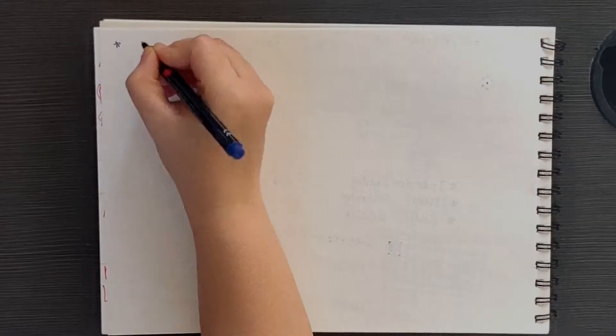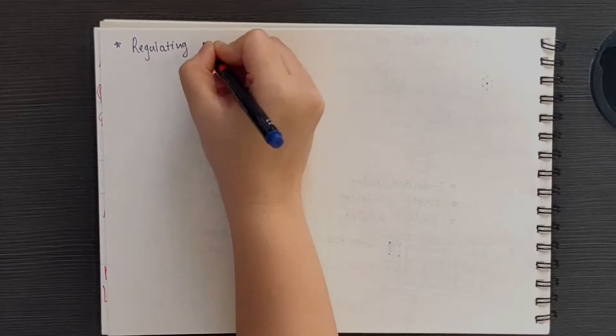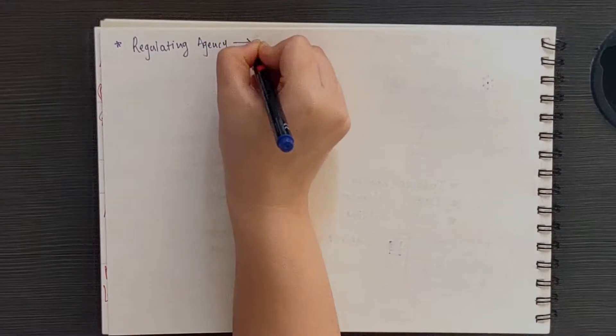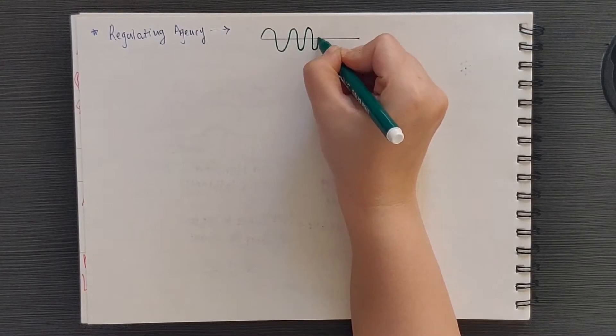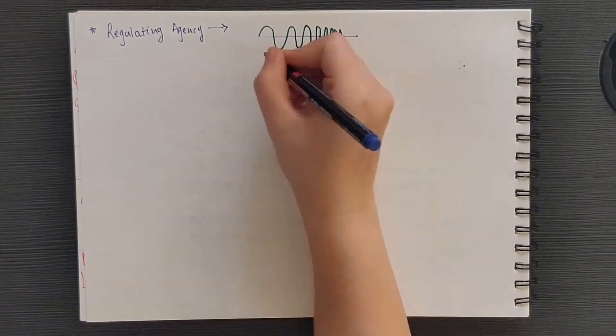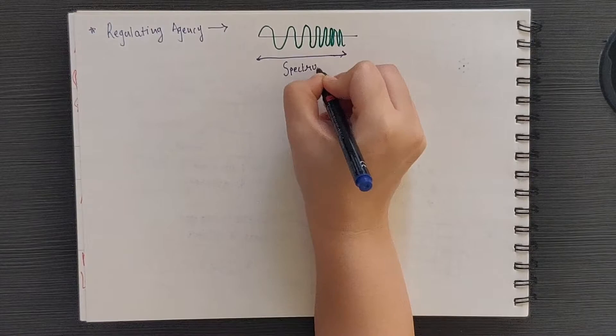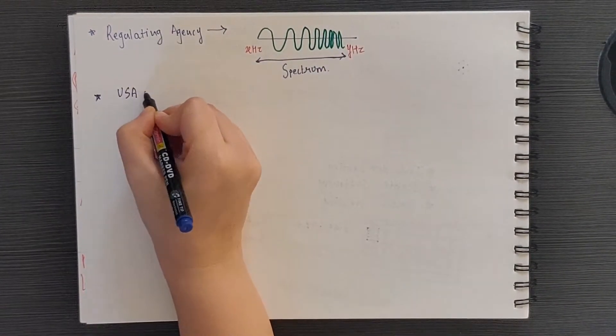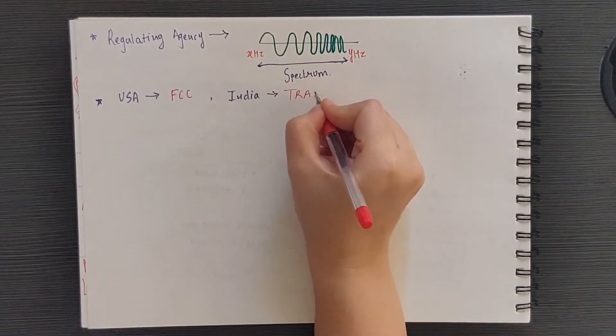Now in every country, there is a regulating agency which manages the usage of various spectrums. Spectrum is nothing but continuous range of frequencies. In USA, this is managed by FCC. In India, it is managed by TRAI and so on and so forth.